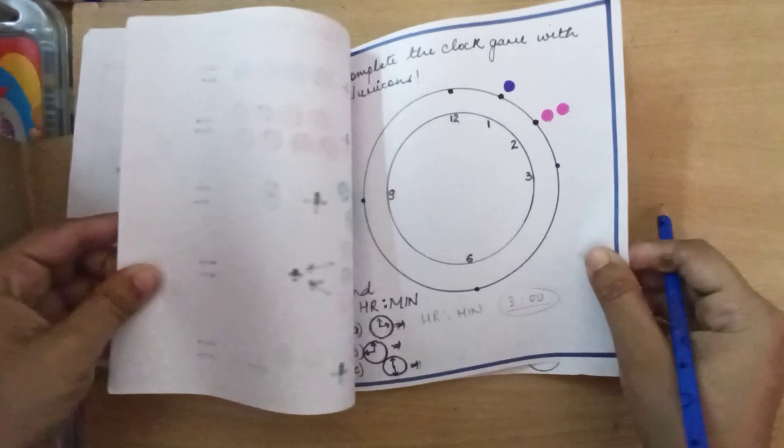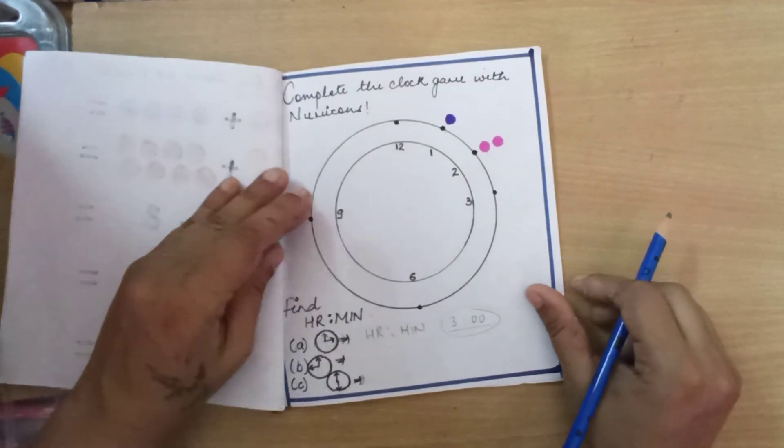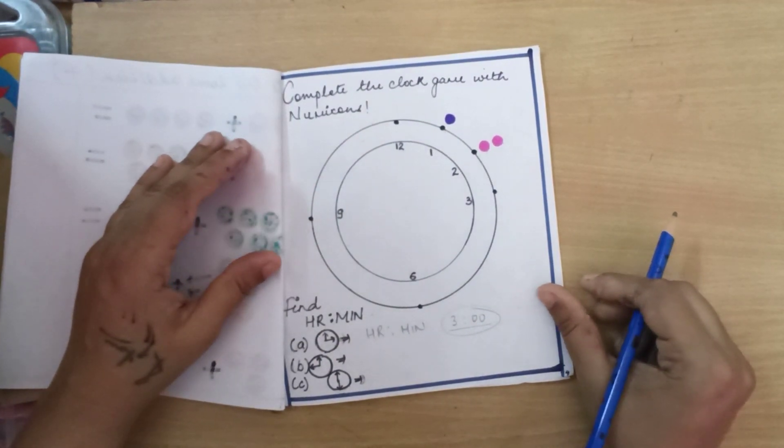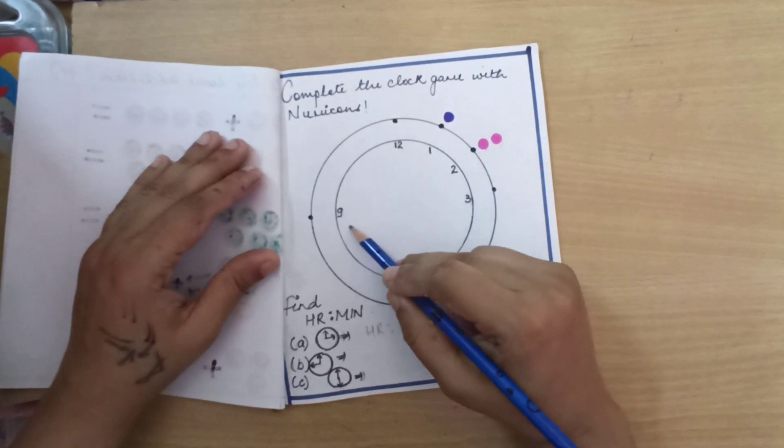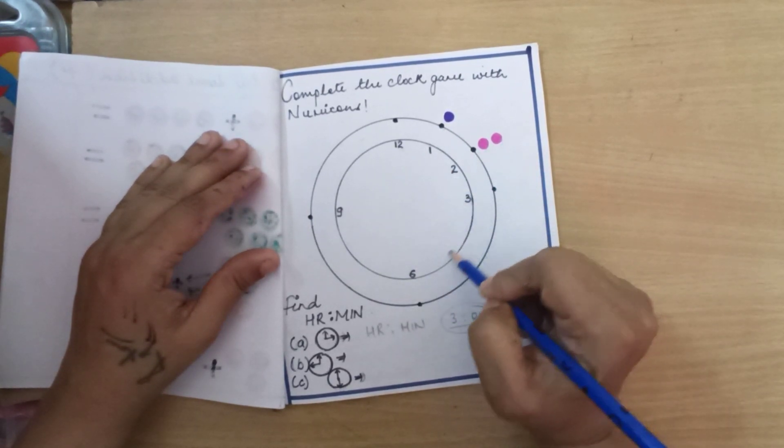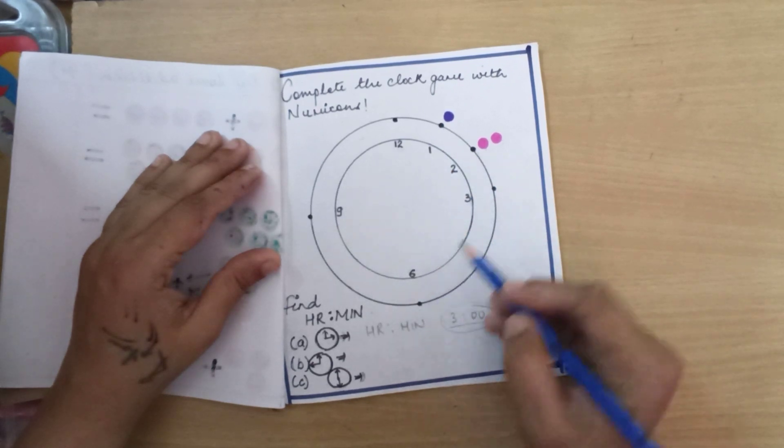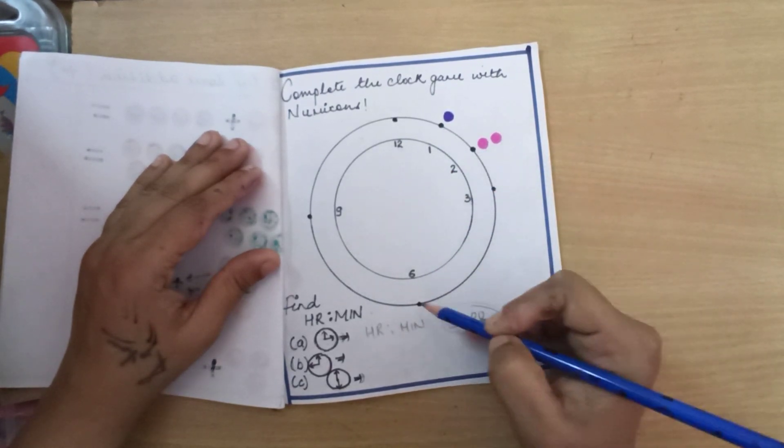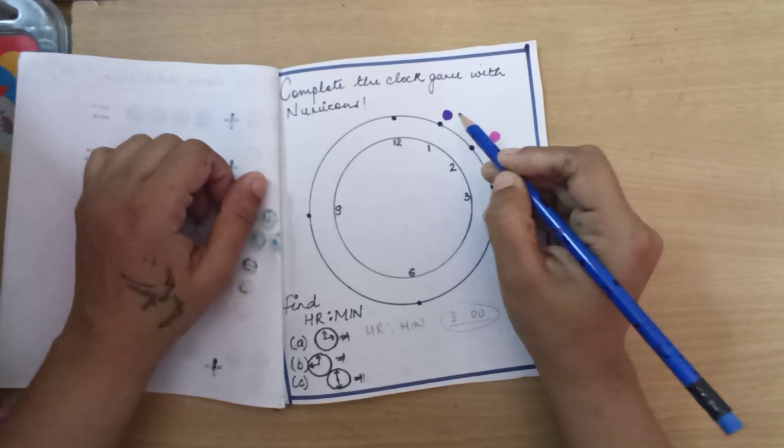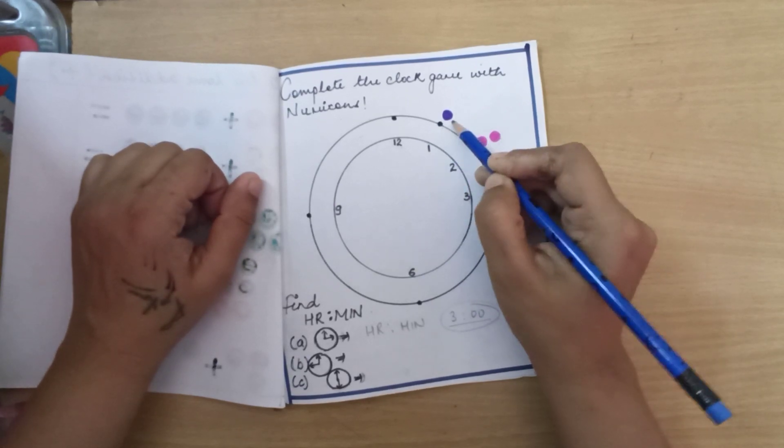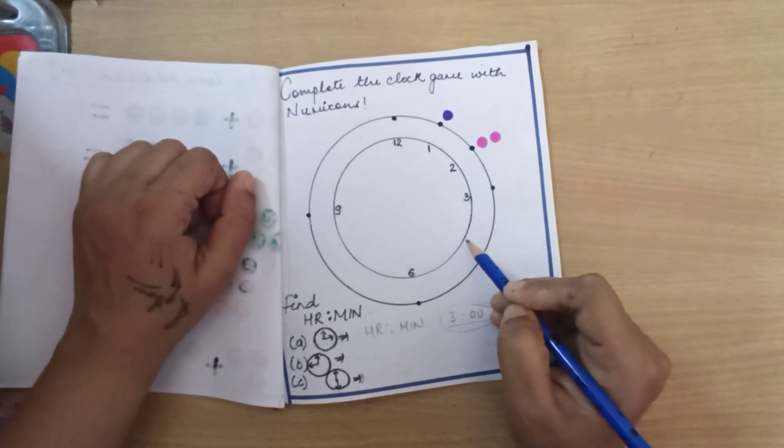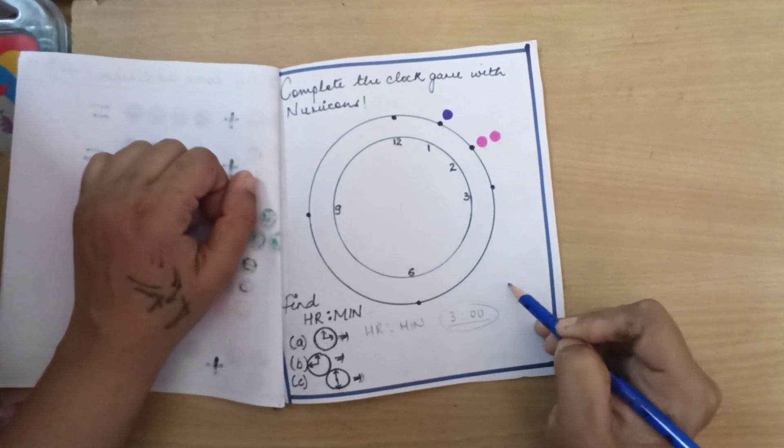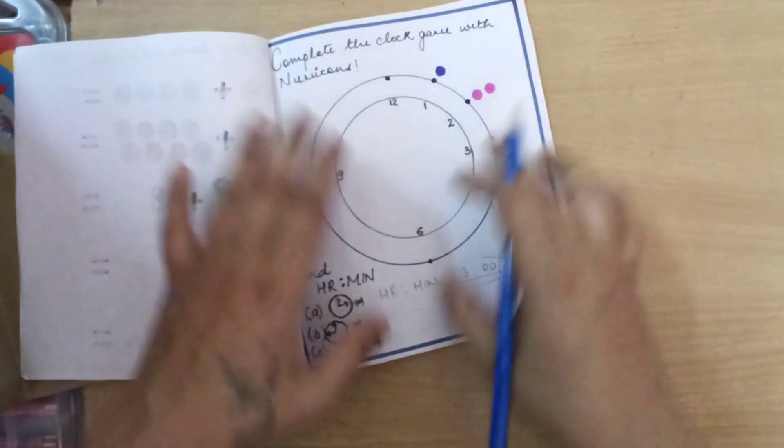Then comes my next activity - that's the clock activity. I have used again balls over here. I've written 12, 3, 6, 9 and I've written numbers. You have to tell the kid to complete the numbers here, make black dots over here and then take a pen and they have to make dots. For example, this is one, so one dot here. Two, two dots here. Three, three dots here. Then four, five - so four, five, whatever dots. And then once they're done with that, then you need to teach them about minutes and hours.